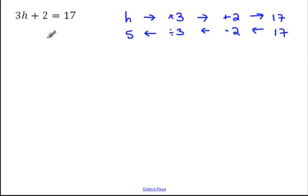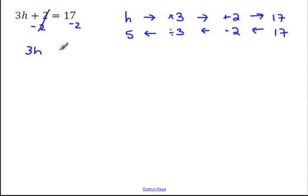Now writing that algebraically: 3h plus 2 is equal to 17. The first step I want to undo is this plus 2, so I do the inverse, which is subtract 2. Whatever I do to one side, I must do to the other, so I subtract 2 from the right-hand side as well. Adding 2 and subtracting 2 gives me 0, so I'm left with 3h on the left-hand side. 17 minus 2 is 15.